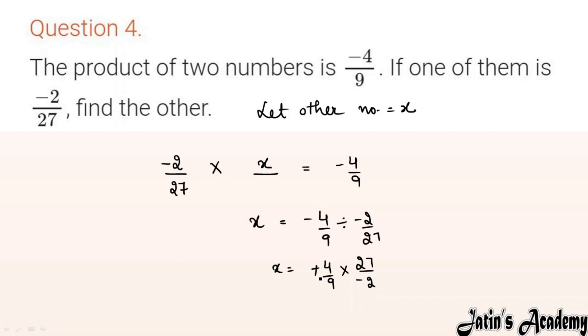Minus and minus cancel, 2 and 4 simplify, 9 and 27 simplify: answer is 3×2 = 6, over 1 = 6. So the other rational number is 6.